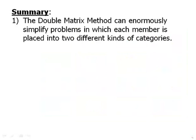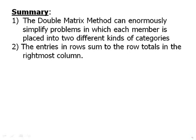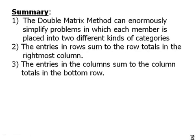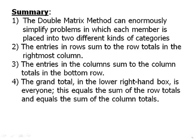The double matrix method can enormously simplify problems in which each member is placed into two different kinds of categories. The entries in the row sum to the row totals in the rightmost column. The entries in the column sum to the column totals in the bottom row. And the grand total in the lower right-hand box is everyone. This equals the sum of the row totals. And it also equals the sum of the column totals.